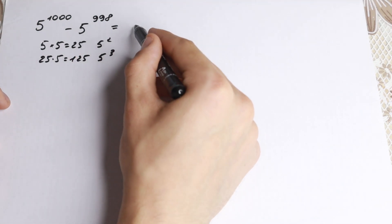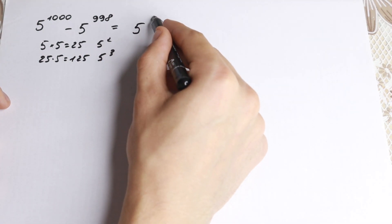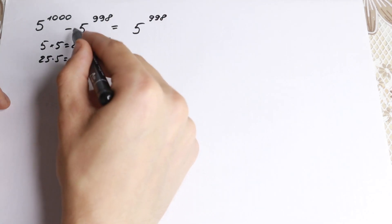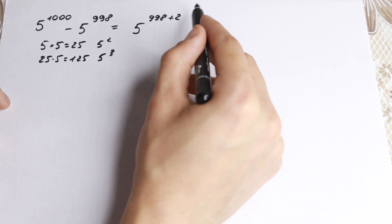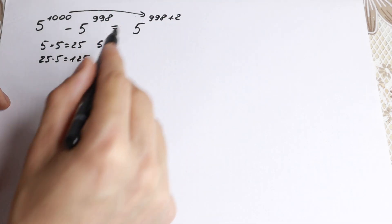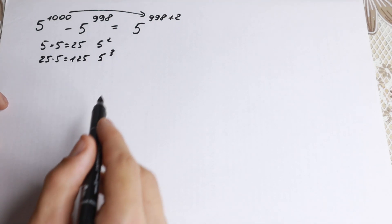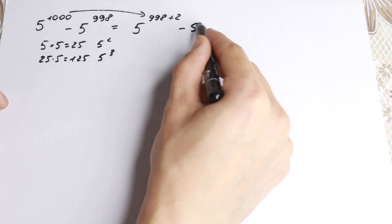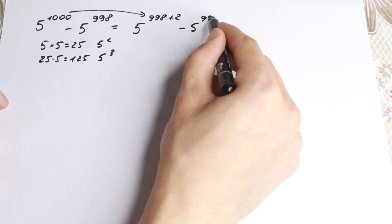But if you look closely, we can write 5 to the power 1000 as 998 plus 2. So let's change this 1000 to this expression: 5 to the power 998 plus 2, minus 5 to the power 998.